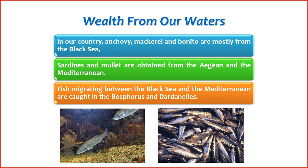Turkey's seas are rich in various fish species, contributing to a vibrant fishing industry. Common fishes caught in Turkey's seas include: 1. Anchovies — a staple in Turkish cuisine, often caught in the Black Sea, used in dishes such as hamsi pilav and hamsi tava. 2. Sardines — popular especially in the Aegean and Mediterranean regions. Grilled sardines are a common dish served in coastal areas. 3. Mackerel (uskumru) — abundant in the Mediterranean and Aegean seas. Grilled or fried mackerel is a favorite dish among locals and tourists.